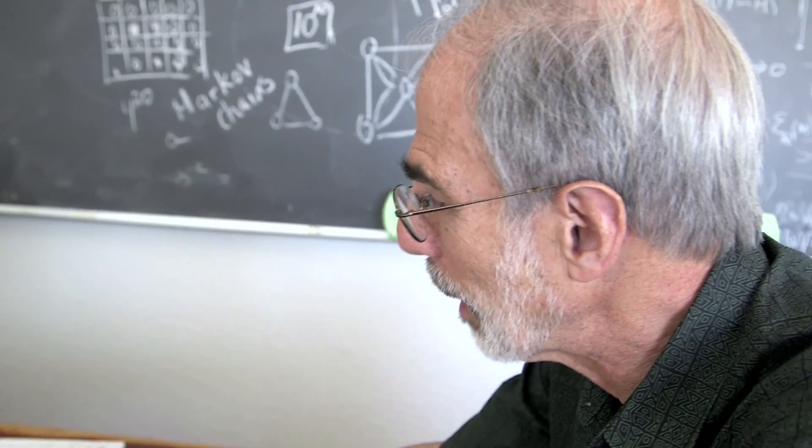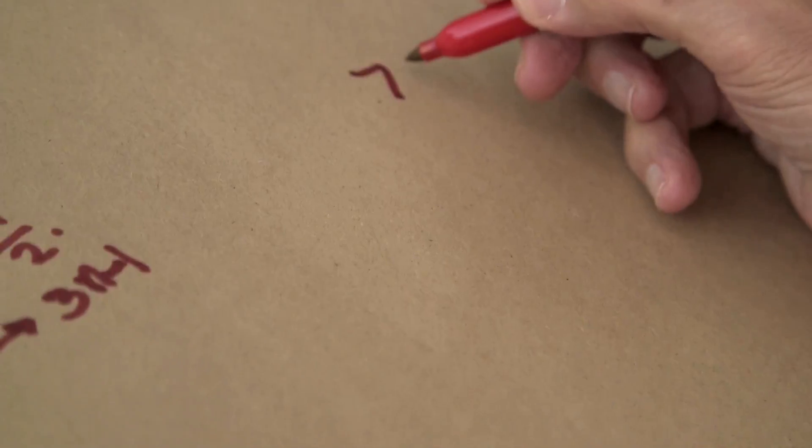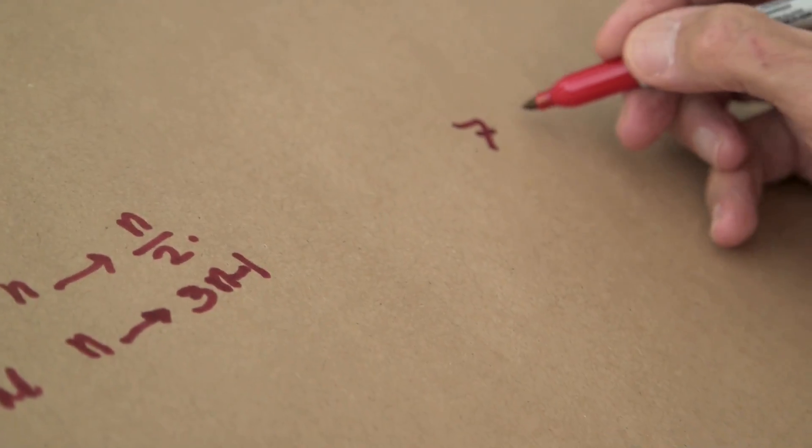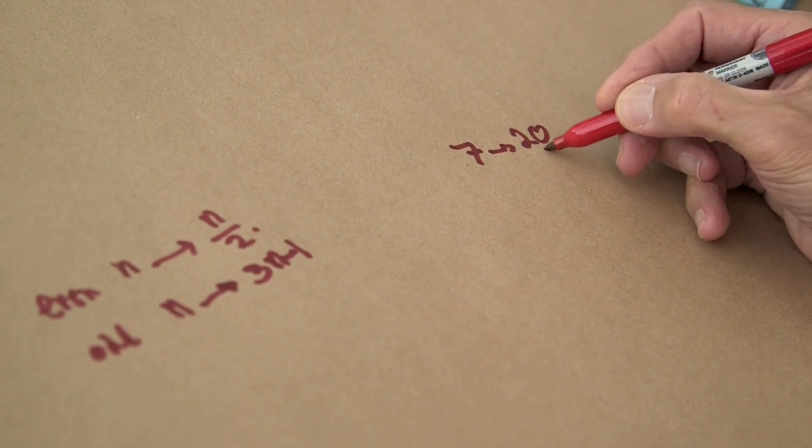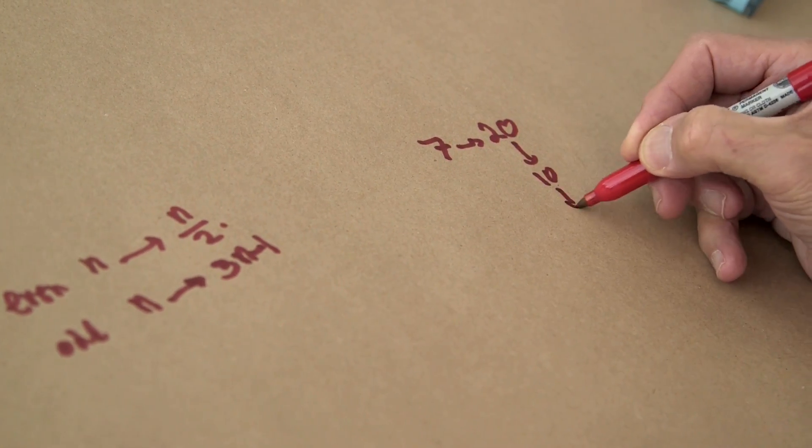Well, let's try 7 again, why not? 7, 3n minus 1, that's 20. That's even, goes down to 10, goes down to 5.